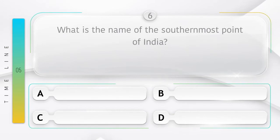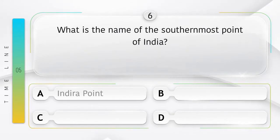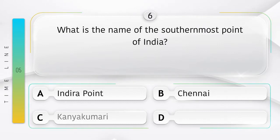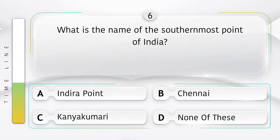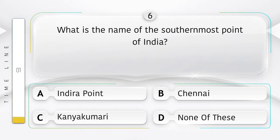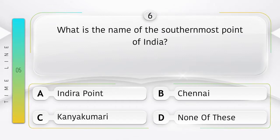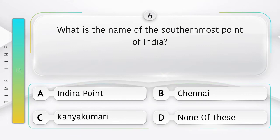What is the name of the southernmost point of India? Option A: Indira Point, B: Chennai, C: Kanyakumari, D: None of these. We don't know the answer — if you know, please comment the answer in the comment box.